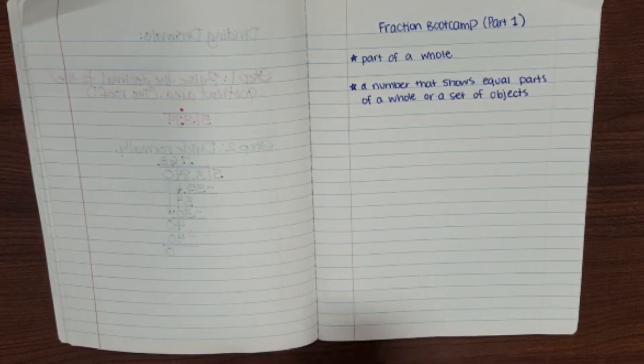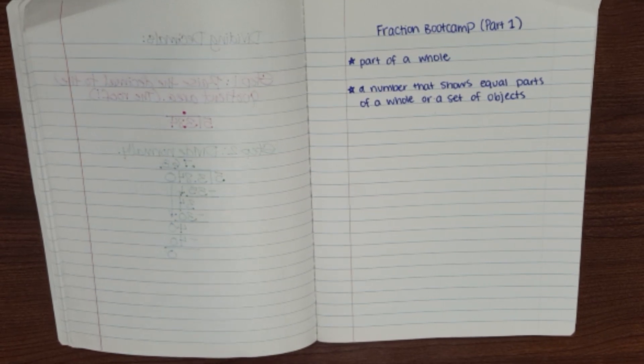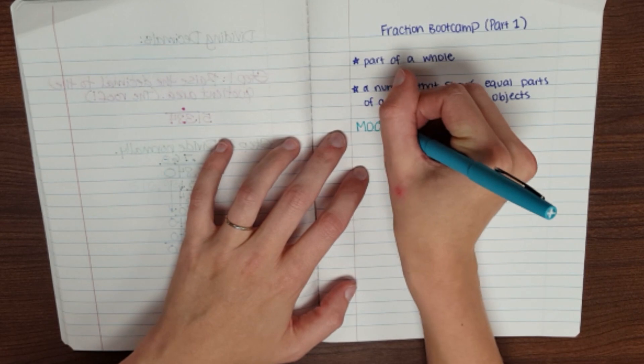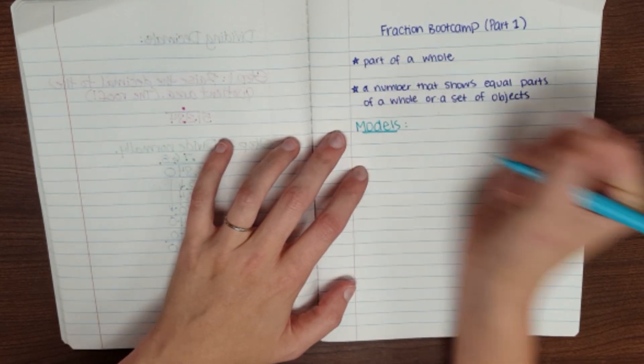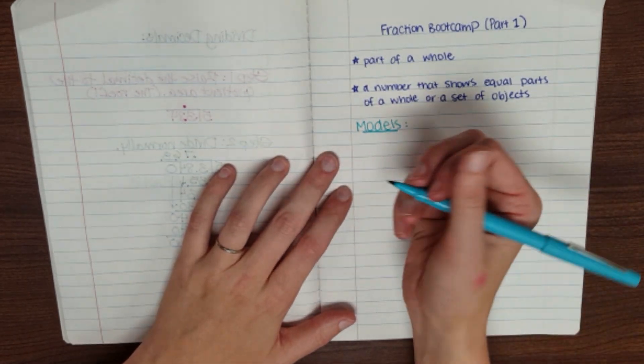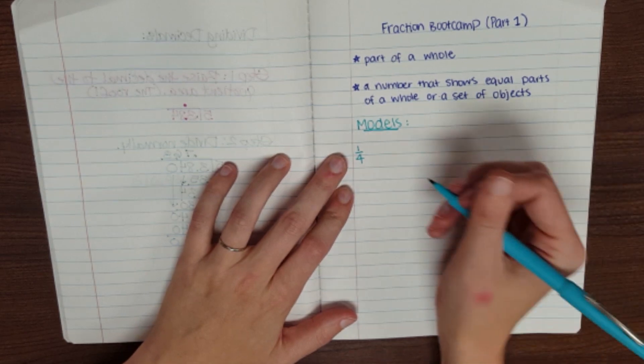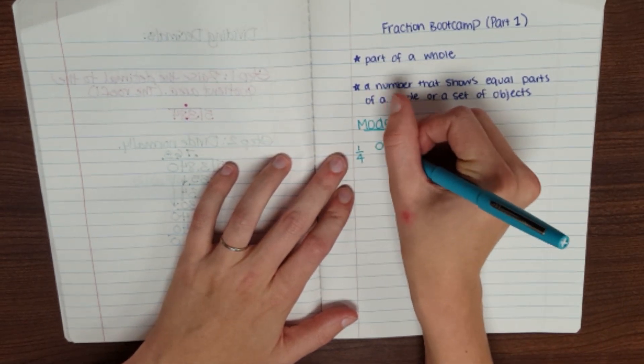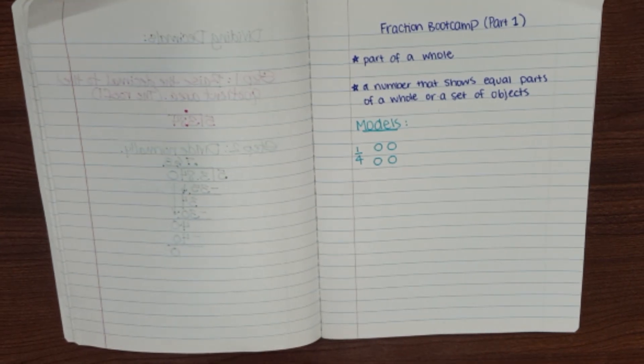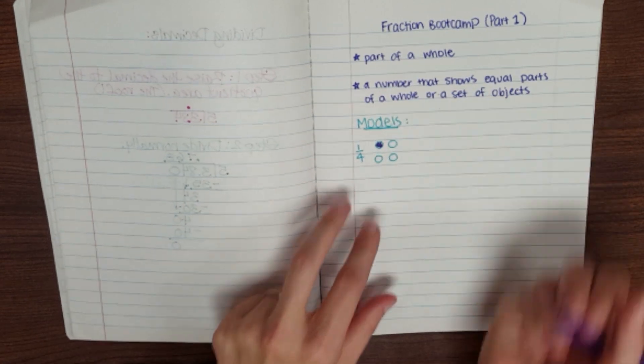Okay, so let's do some models to kind of show what these definitions mean. So I'll put a little part under here called models. This would be if we were to show the fraction one-fourth, for example, as a part of a set. So maybe you have four cookies, or four circles, or four whatevers. If I wanted to show that I had one out of four parts, that would be one out of four.